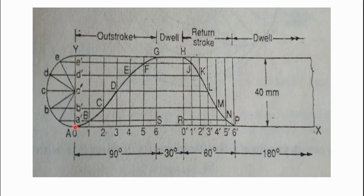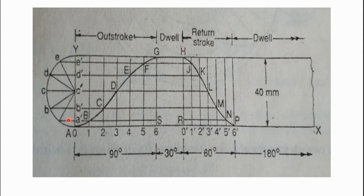From each division point on the outer stroke and return stroke angles, draw vertical lines. From each division point on the y-axis stroke length, draw horizontal lines. The intersection of the vertical line from point 1 with horizontal line b-dash gives point B; the vertical line from point 2 with horizontal line c-dash gives point C; similarly, vertical line 3 meets horizontal c-dash at D, and so on.